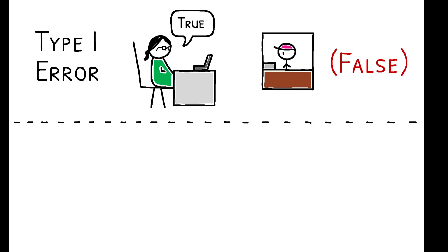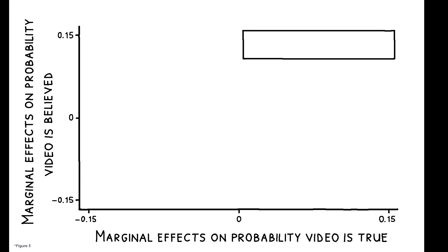They made both Type 1 and Type 2 errors. Moreover, these results do not reflect simple noise. Receivers made systematic mistakes when predicting a video's truthfulness.